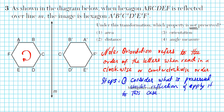If you read from A all the way counterclockwise, you have A, B, C, D, E, F. If you want to compare the original image with the reflected image, you start from A prime and proceed in a clockwise fashion also. Comparing those two is how you can determine if the order is preserved. The steps we'll use: exhaust the options, consider what is preserved under whatever kind of transformation we're given, and apply to this case.